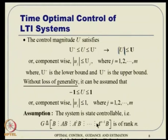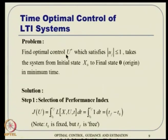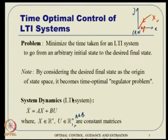The assumption here is that the system is state controllable. It turns out this is a necessary condition for what is called a normal time optimal control problem. If it does not satisfy this, it leads to an abnormal situation — something like singular control. To restate the problem formally: find an optimal control u* with |u_j| ≤ 1 that takes the system from any initial state x_0 to the origin in minimum time.